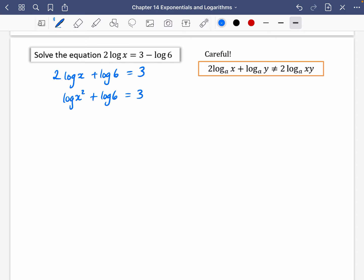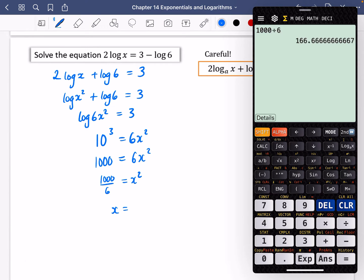I'm going to deal with that 2 by putting it inside as a power like this. And then I'm going to use the addition law and put these together. So that's the log of 6x² equals 3. So remember, this is saying it's a base 10. So I'm saying the power of 10 that gives me 6x² is 3. In other words, 1000 is 6x². So I'll do 1000 divided by 6, which is x². And then I will square root it. So I can either do it in exact form or in decimal form. So x is plus or minus 12.9, three significant figures.